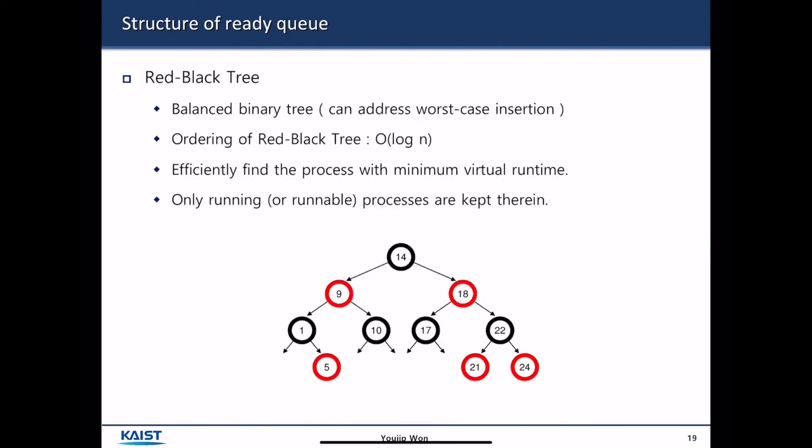CFS Scheduler uses Red-Black Tree to maintain the ready queue. It is a balanced tree, and the search insert overhead is bounded by order of log n. Red-Black Tree allows CFS Scheduler to efficiently find the process with minimum virtual runtime.